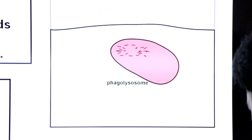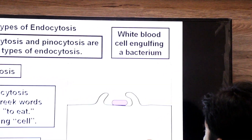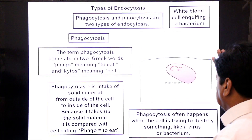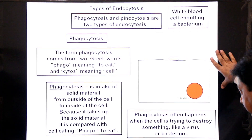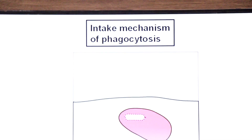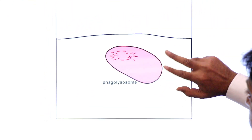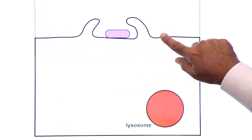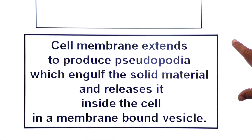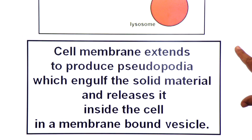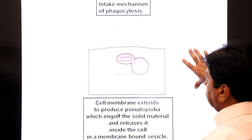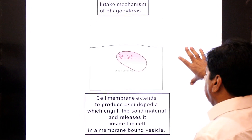The white blood cell engulfs the bacterium by phagocytosis. The mechanism of phagocytosis involves the cell membrane extending to produce pseudopodia, which engulf the solid material and release it inside the cell in a membrane-bound vesicle. Uptake of solid material by a cell, especially white blood cells, is known as phagocytosis.